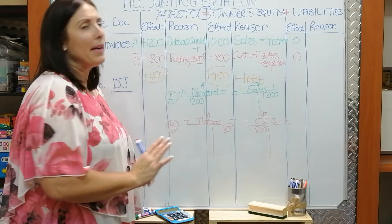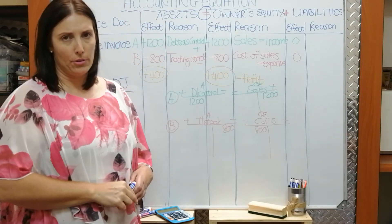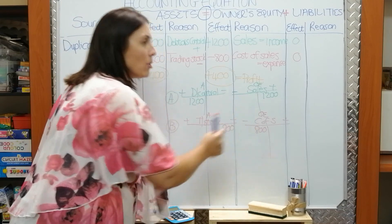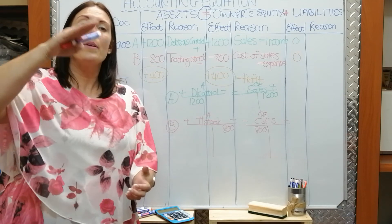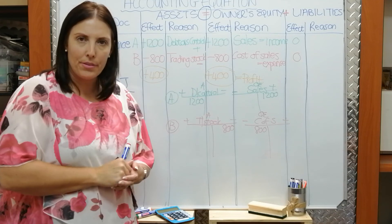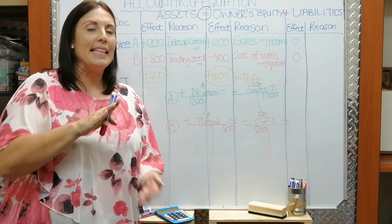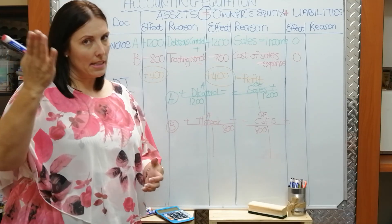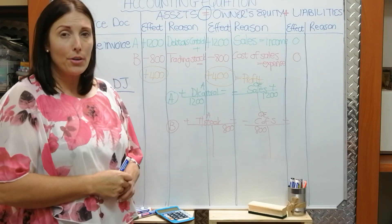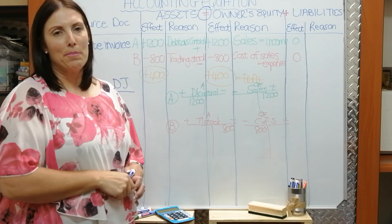Many students battle with this one especially. They look at this and say cost of sales is decreasing with 800 Rand — no. Remember, an expense affects the owner's equity. The expense is not decreasing here; in fact, the expense becomes more and more. But whenever an expense increases, it means the profit that the owner can take home at the end of the financial year gets smaller and smaller. So please remember: whenever an expense increases, it decreases the owner's equity. Cost of sales is increasing, but it decreases the owner's equity. I really hope this explanation on the whiteboard makes things clearer and you can now go and complete Activity 5.